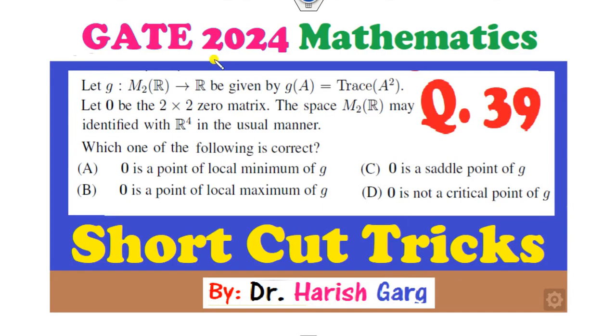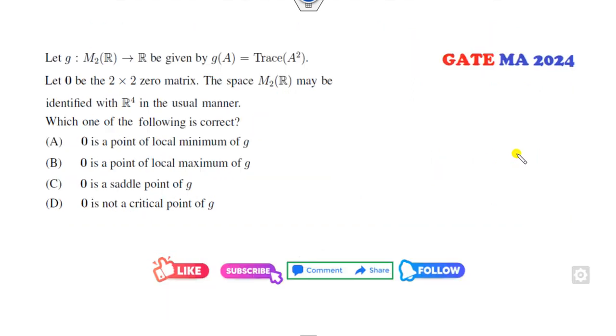Hello students, welcome to the next lecture of the GATE 2024 mathematics. Today I will explain how you can solve this question, problem 39, in a very simple manner. G is a mapping from the 2×2 real matrix to R defined by this one.